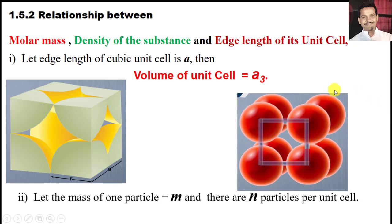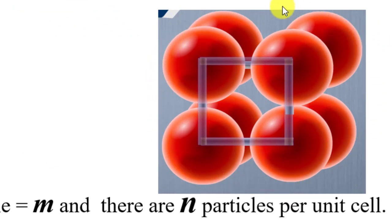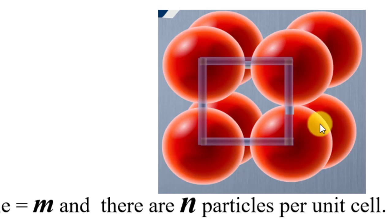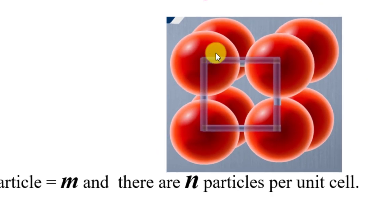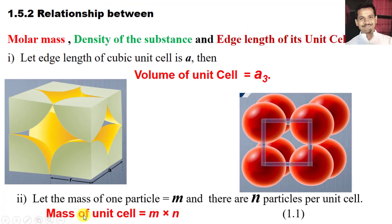Now let us find out the mass of the unit cell. The mass of the unit cell is nothing but the mass of all the atoms in the unit cell. If we suppose that the mass of one atom is 'm' and there are a total of 'n' atoms, then the total mass of the unit cell will be mass of one atom multiplied by the total number of atoms. So the mass of the unit cell is equal to m_atom × n.